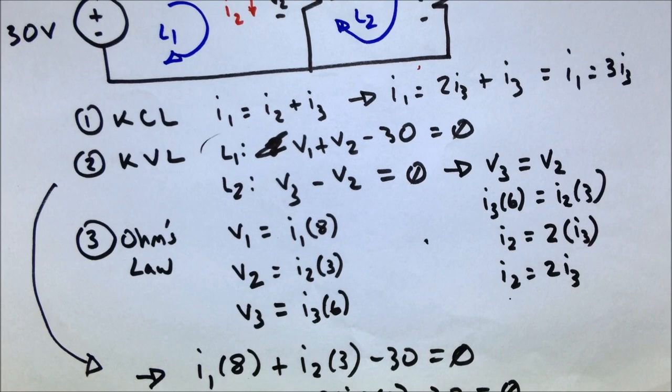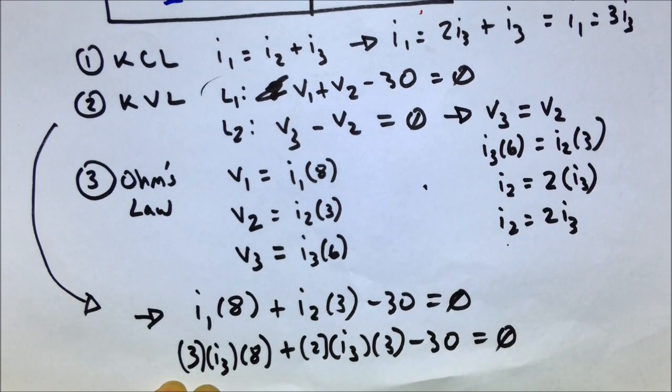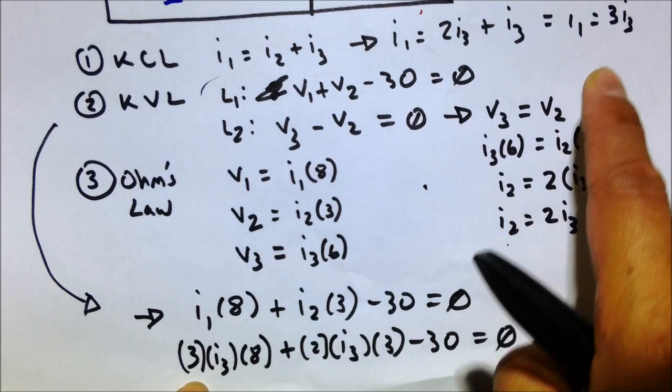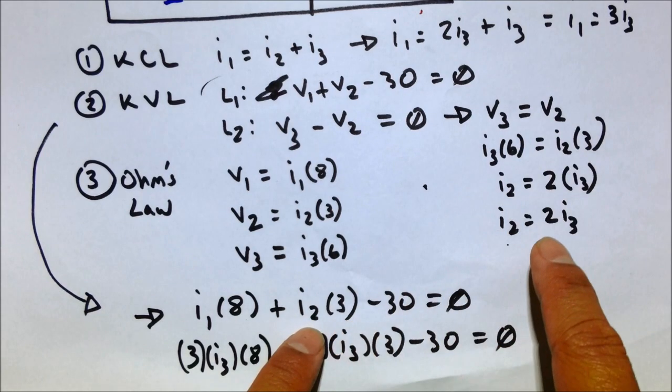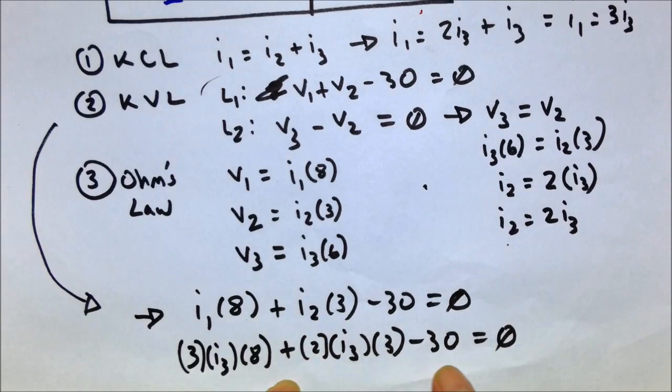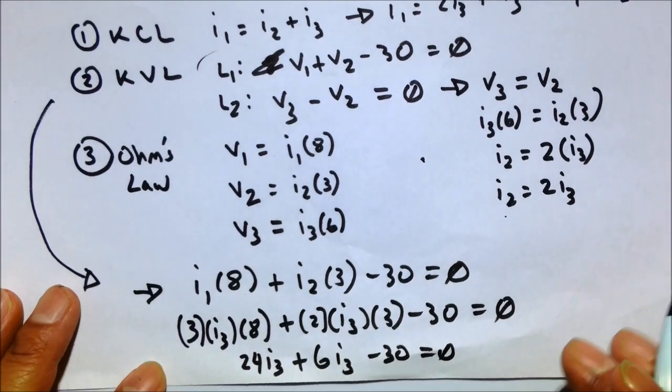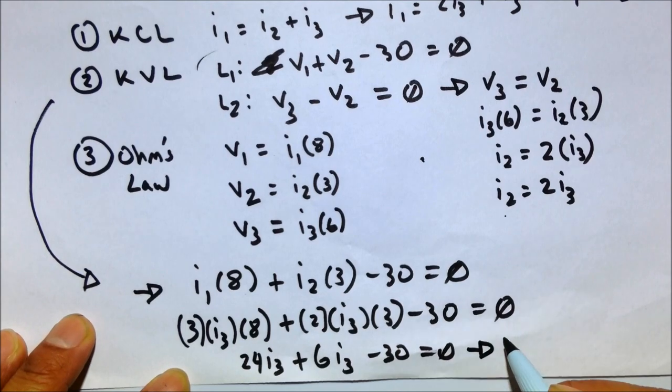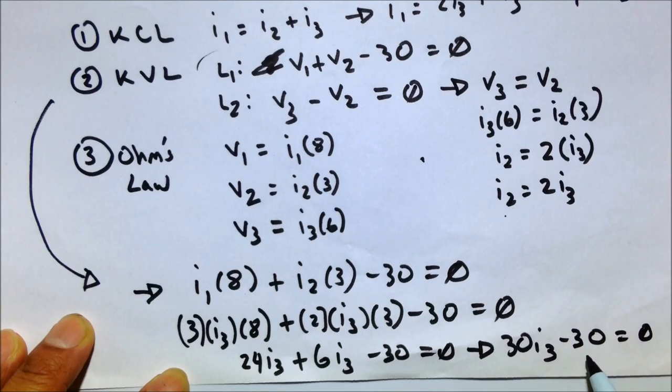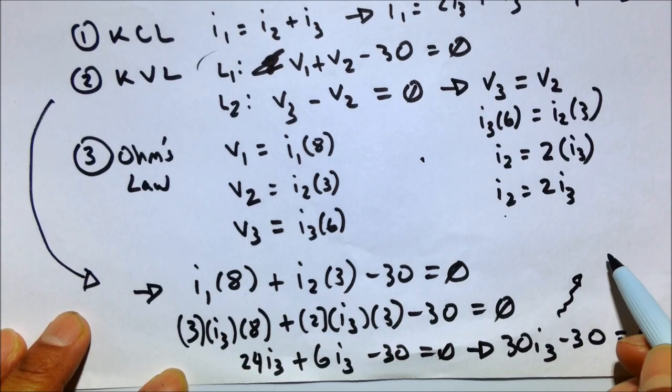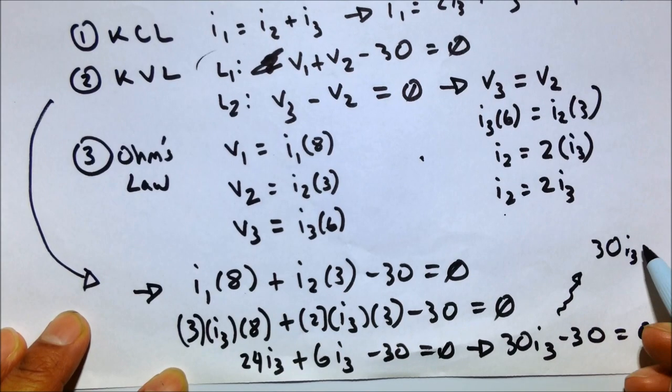One equation, one variable. We're golden. 3 times I3 because that is equivalent to I1 based off that equation, 3 times I3. And then I2 times 3. Well, I2 we know is 2 times I3, so 2 times I3. So now we have one equation with just one variable. Let's rewrite this. So 24 I3 plus 2 times 3, 6 I3 minus 30 equals 0. Combine these guys, so that equals 30 I3. And then we can move the 30 to the other side here. Follow the arrows. So 30 I3 equals 30.